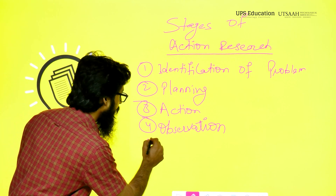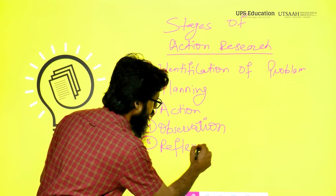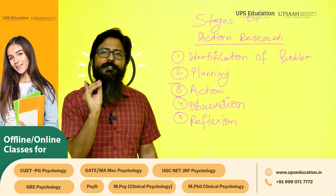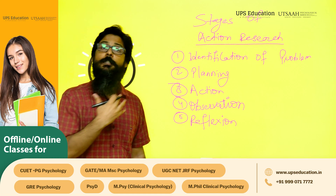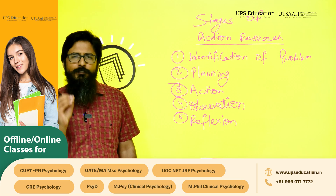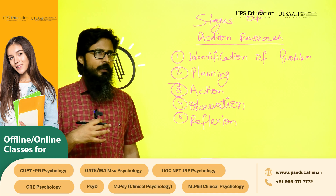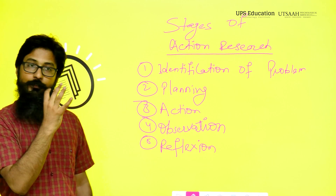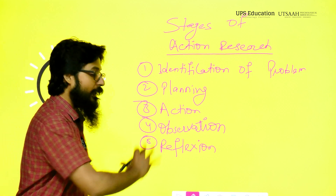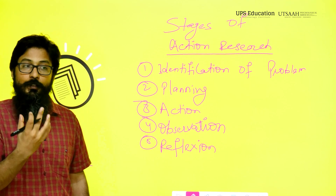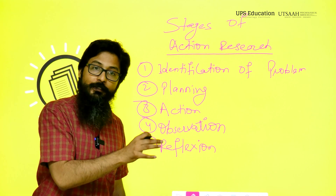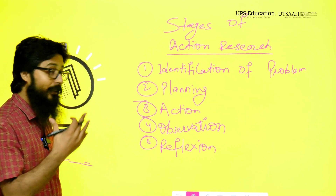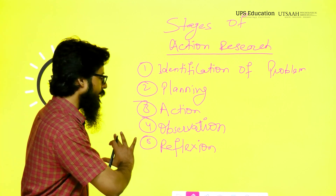Then there will be reflection, the fifth stage. Reflection simply means after collecting the data, the teacher tries to understand what is working and what is not, based on the data they have collected. The teacher would reflect on whether students are more engaged, and if they are not, why not. At the reflection stage, they use the data collected at the observation stage to understand whether students are more engaged in the class.